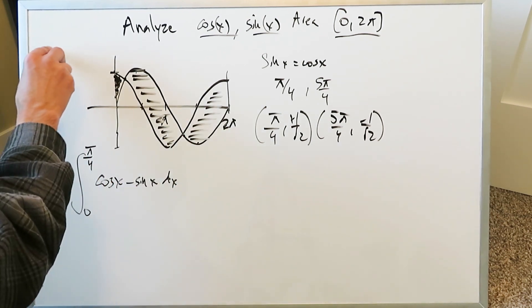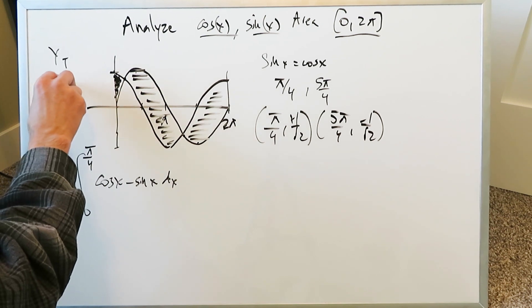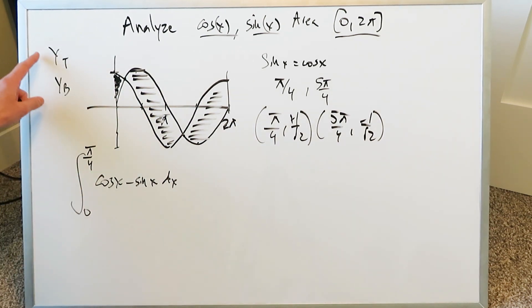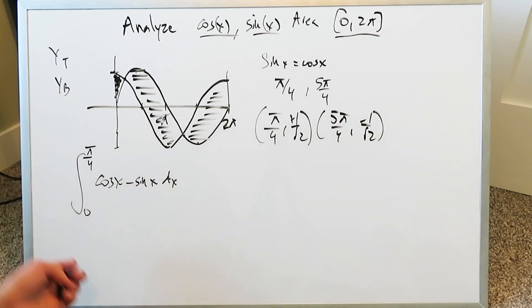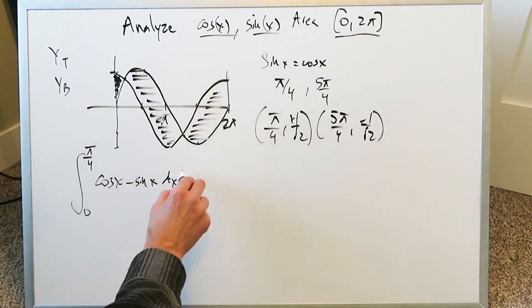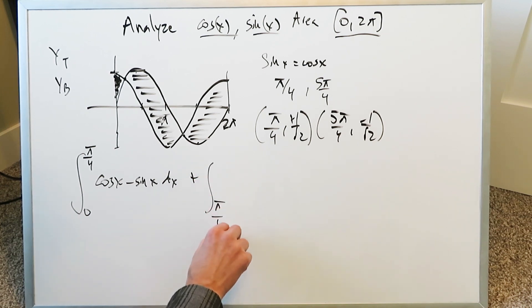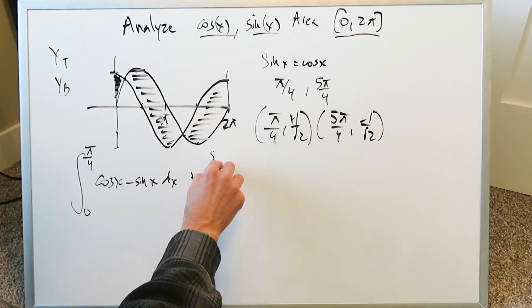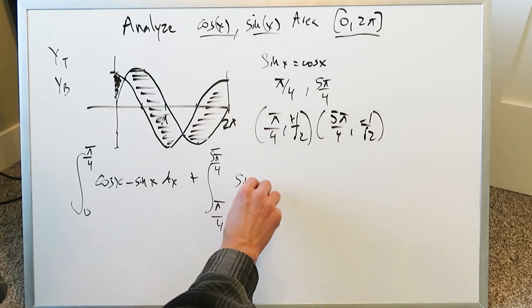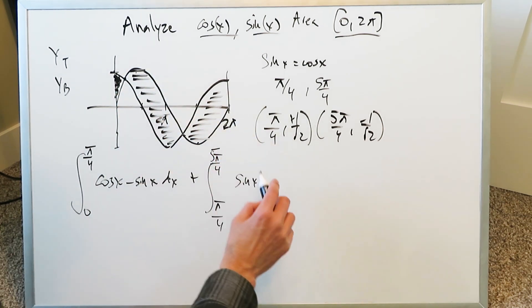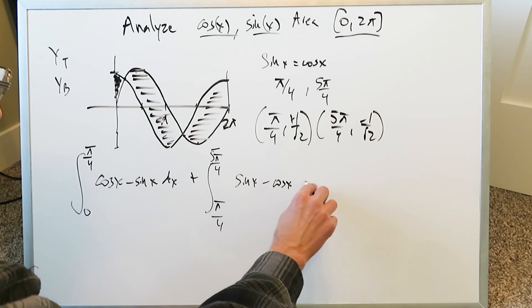Superior and inferior refer to the top boundary and lower boundary, respectively. From π/4 to 5π/4, sin(x) is the top boundary curve and cos(x) is the lower boundary curve.